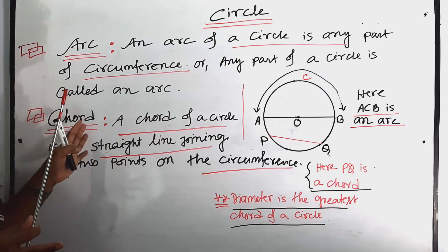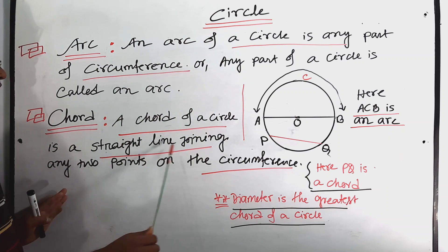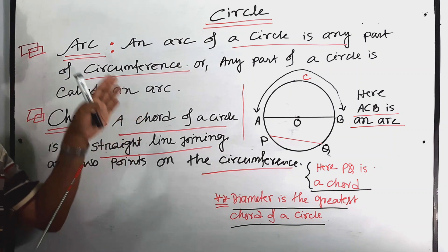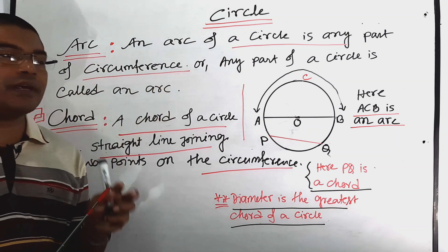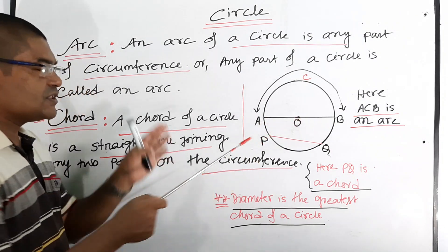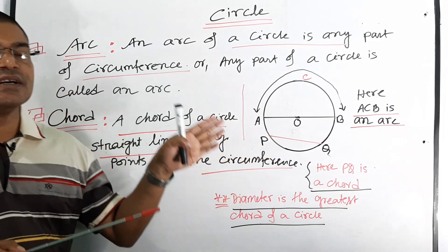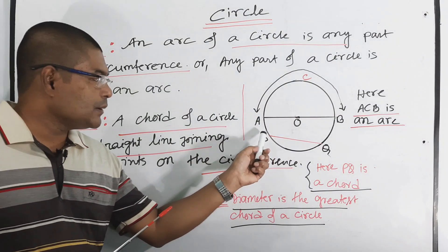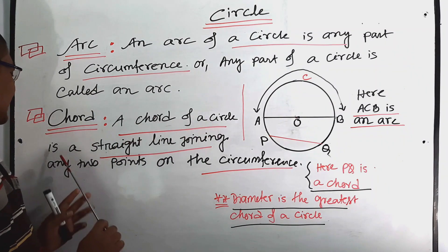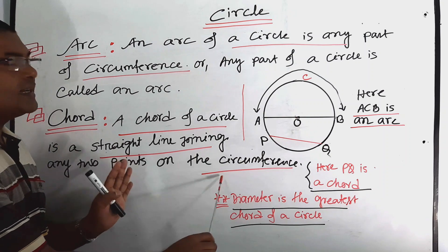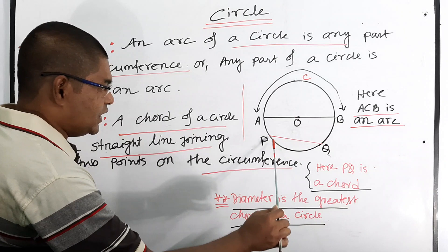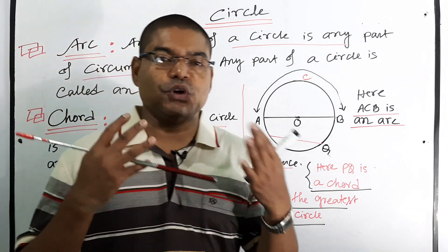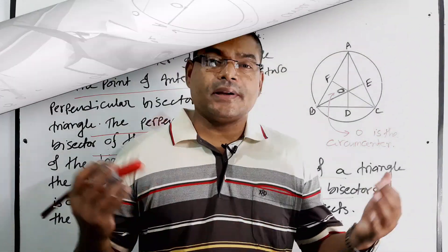A chord of a circle is a straight line joining any two points on the circumference. Here AB is a straight line which passes through the center of the circle, so the diameter is the greatest chord. A chord PQ joins any two points on the circumference — PQ is the chord, and the diameter is the greatest chord.